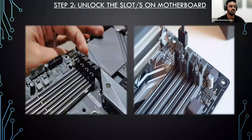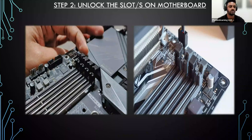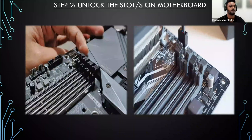Step two is to unlock the RAM slots on the motherboard. Before grabbing your memory, you'll need to unlock a small clip or two depending on how many RAM sticks you are installing. Depending on the board, each memory socket will either have a single clip or two clips to unlock on either end of the socket. To unlock the clips, simply push it backwards — it may require a bit of a firm push, but don't use too much force.